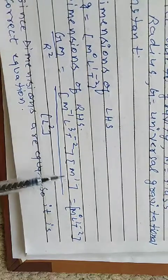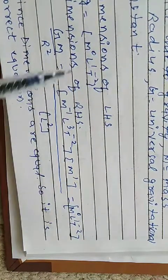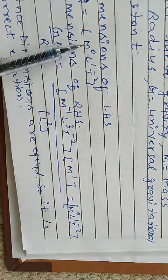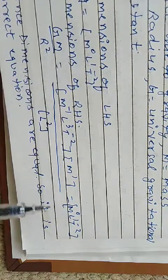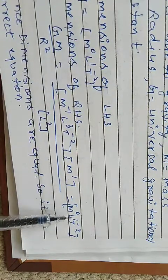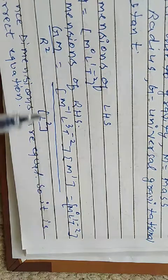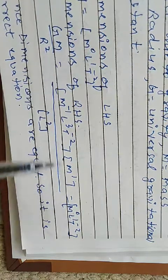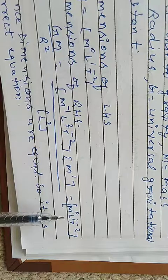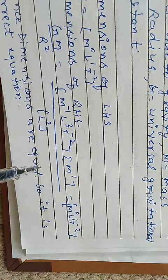If we solve it, then answer is m⁰l¹t⁻². Left hand side dimension m⁰l¹t⁻², right hand side dimension m⁰l¹t⁻². Right side and left side both dimensions are equal. If right side and left side both dimensions are equal, therefore the equation is correct.